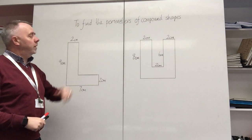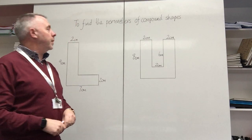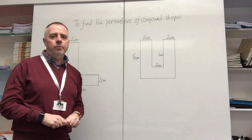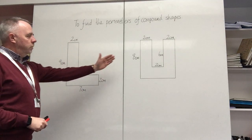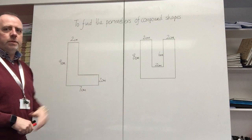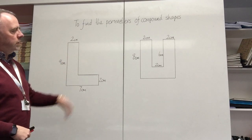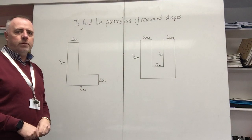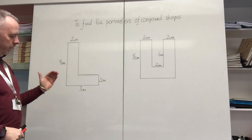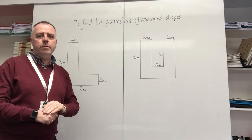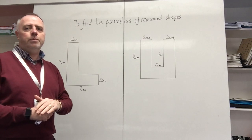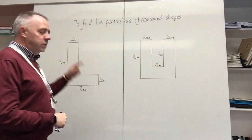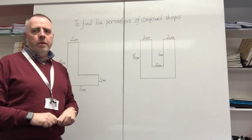Morning Year 6. In today's session we're going to have a little think about how to find the perimeters of some compound shapes. If we have a look at both of these shapes at the same time, you'll probably notice that these shapes are made up of a series of rectangles. In the last session we learned how to find the perimeter of a rectangle and a square, and we established that you had to measure the distance around the outside of the shape.